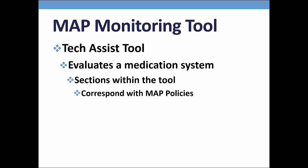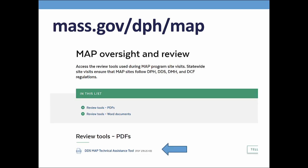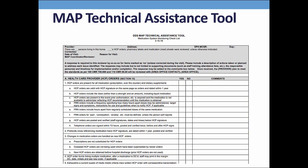When going to a program, I use the TechAssist Tool to evaluate the medication system. To locate the tool, go to the MAP-friendly URL, click on Oversight and Review. If you printed out a copy to follow along, you might want to grab it and a pen in case you want to take notes. Modifications were made to the tool to expand upon what we currently ask for. As I move through the slides, the bottom right corner has a corresponding MAP policy reference.